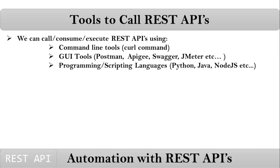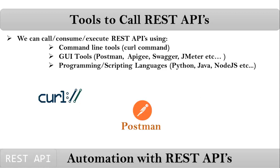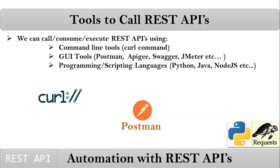But in our course, we are discussing about the curl command — how to execute our REST APIs from the command line using curl. Then we will see about Postman, and how we can execute our REST APIs using Postman, which is a GUI tool. Finally, we will implement some automation scripts using Python with the help of the requests module. So these three are the tools we are going to use to work with REST APIs in our course.